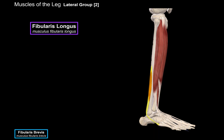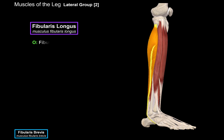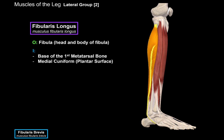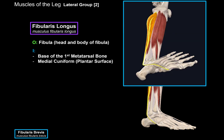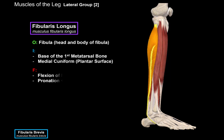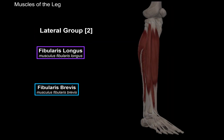Next we have the fibularis longus, which covers the whole lateral aspect of the leg. It originates from the fibula — both the head and body of the fibula. It inserts at the base of the first metatarsal bone and the medial cuneiform on the plantar surface. Once it passes behind the lateral malleolus, it goes on the plantar surface and attaches to these two bones. Its function is flexion of the foot, as well as pronation and abduction of the foot. That was the lateral group.